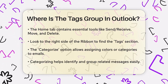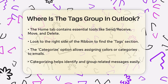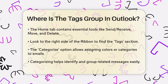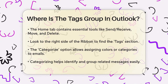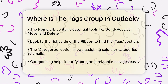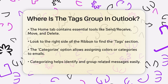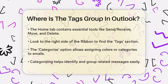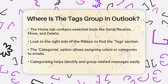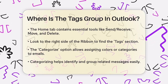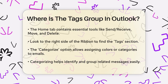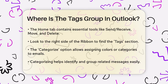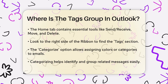Once you're in the Home tab, look to the right side of the ribbon. You should see a section labeled Tags. This is where you can find options like Categorize, Follow-up, and Priority. The Categorize option allows you to assign colors or categories to your emails, which can help you quickly identify and group related messages. For example, you might categorize emails from different projects or clients using different colors.